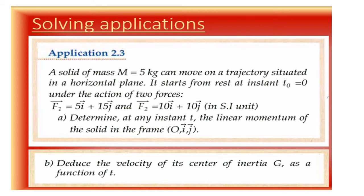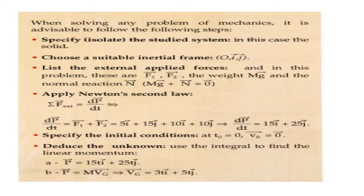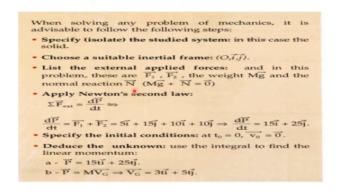In part B, deduce the velocity of its center of inertia as a function of time t. When solving any problem of mechanics, it is advisable to follow these steps: first, specify the studied system — in this case, it is a solid. Second, choose a suitable inertial frame of reference, which is here Oij. Third, list the external applied forces. In this problem, the forces acting on a box moving on a horizontal plane are F1, F2, its weight Mg, and the normal reaction N. Where Mg and N have the same line of action, opposite direction, and same magnitude, so Mg plus N equals 0.